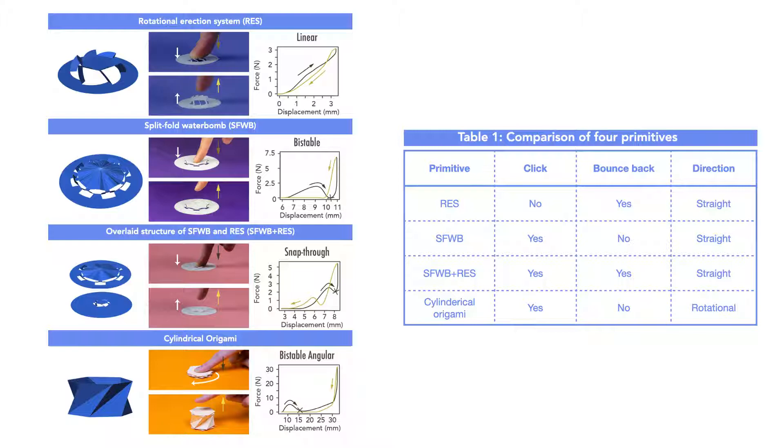Finally, cylindrical origami shows bistability like split fold water bone. The difference between the cylindrical origami versus all the other primitives is that the structure exhibits angular rotation when the force is applied.